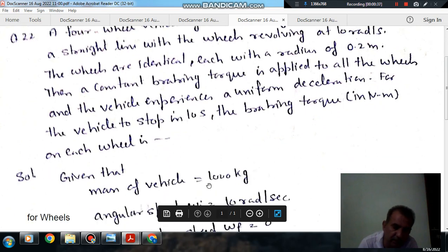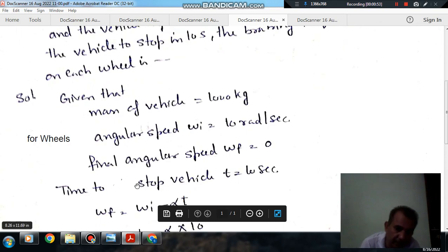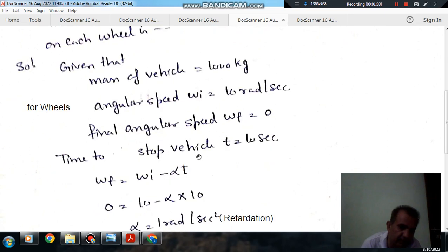So, it is given that the mass of the vehicle is 1000 kg. For wheels, the initial angular speed omega_i is 10 radians per second, and finally they stop, so the final angular speed omega_f is 0. As the speed is decreasing, there is angular retardation. The time to stop the vehicle is 10 seconds, so the time for the angular speed to reach 0 is also 10 seconds.